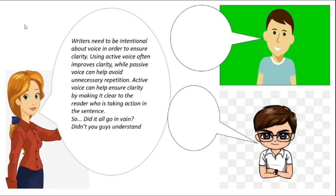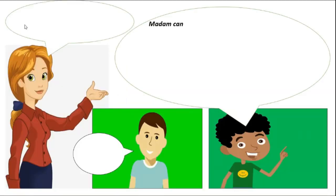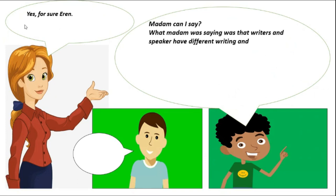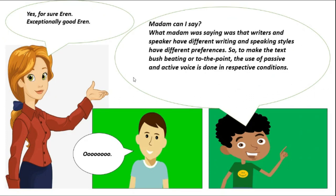Active voice can help ensure clarity by making it clear to the reader who is taking action in the sentence. Madam, kindly wait, we did not understand. What madam was saying was that writers and speakers have different writing and speaking styles — they have different preferences. So, to make the text precise or to the point, the use of passive and active voice is done in respective conditions. Exceptionally good, Erin. Thank you, madam.